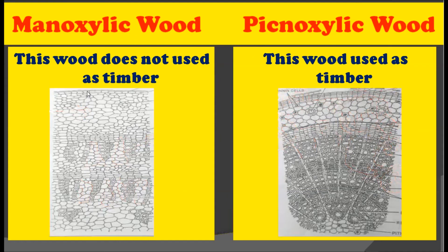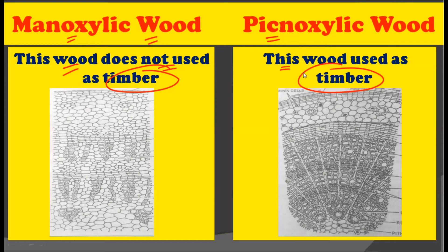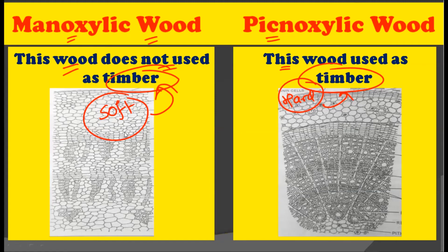The next difference is that Manoxylic wood is not used as timber, while Pachyxylic wood is used as timber because it is a hard wood, and hard woods are generally used in timber. Manoxylic wood is a soft wood, and that is why it cannot be used as timber.